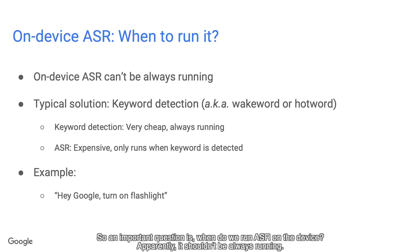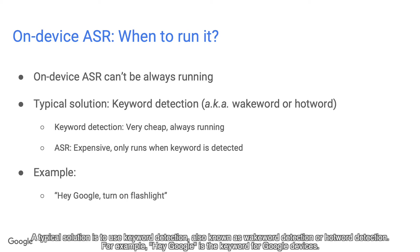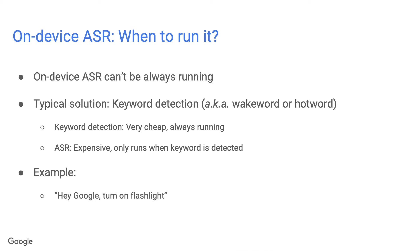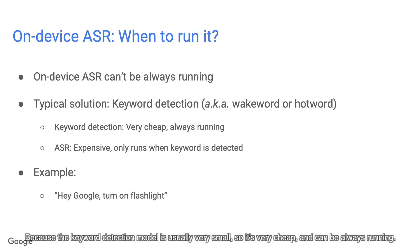Apparently, ASR shouldn't be always running. A typical solution is to use keyword detection, also known as wake word detection or hotword detection. For example, "Hey Google" is the keyword for Google devices. Because the keyword detection model is usually very small, it's very cheap and can be always running. ASR is usually a big model, so we only run it when the keyword is detected.